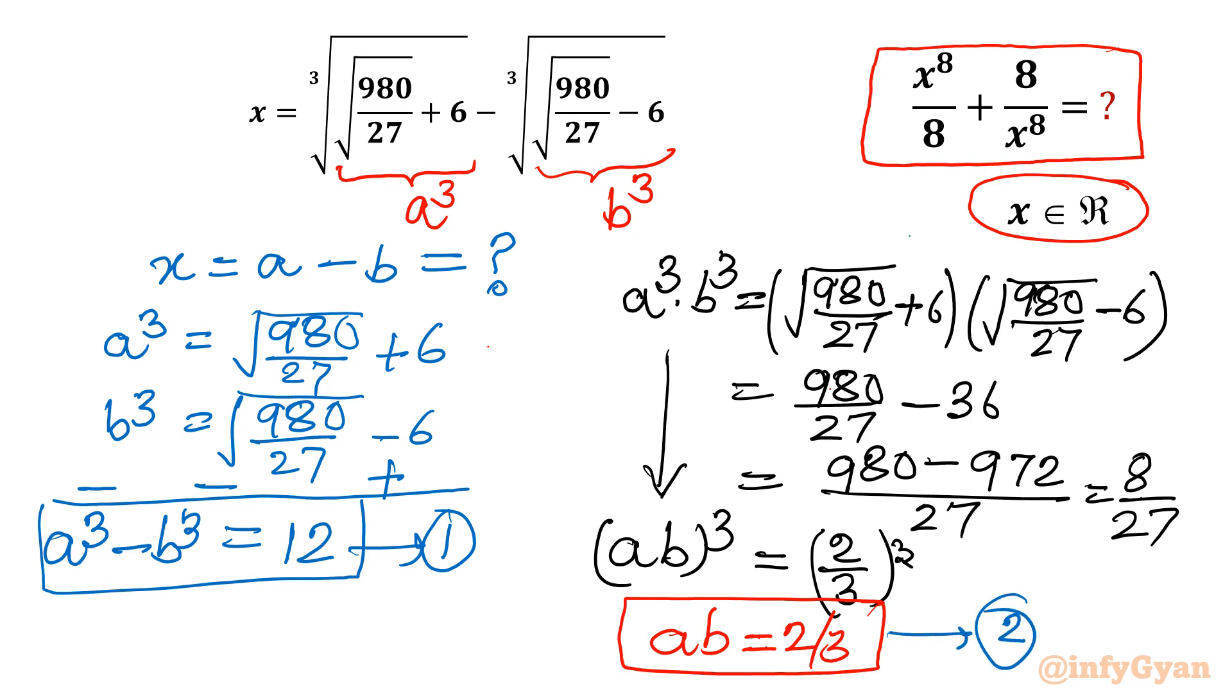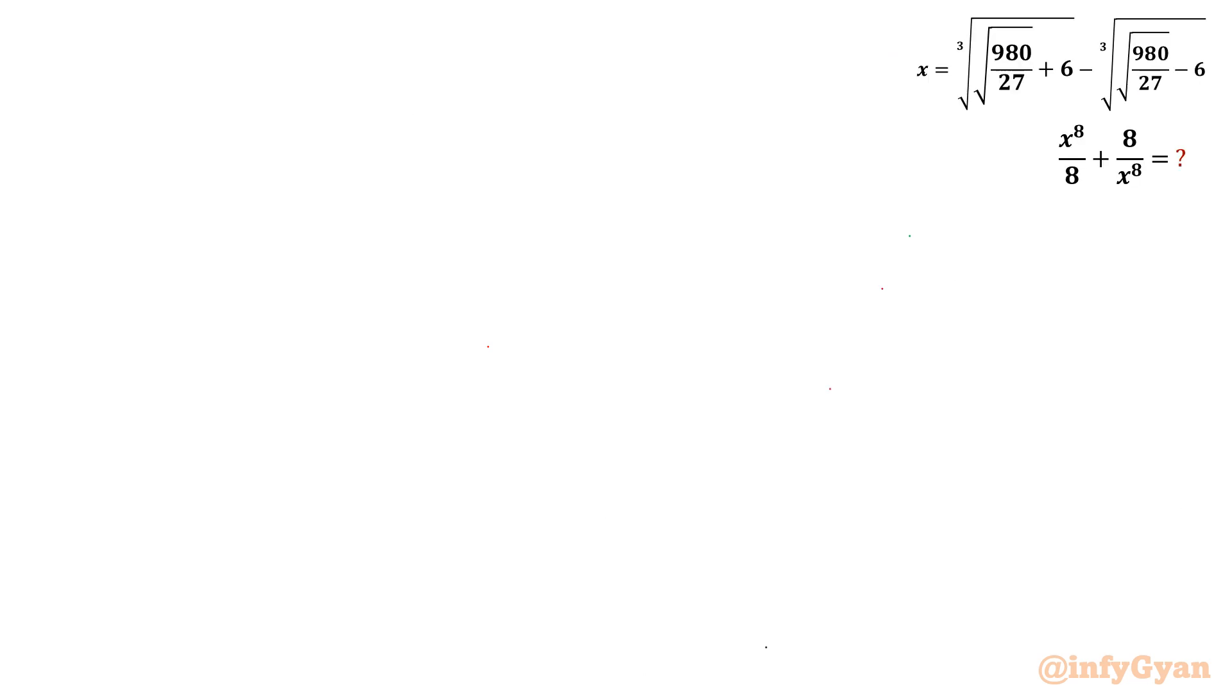So two very important equations are known, and our target is to find out a minus b or x, both are the same thing. So let us find out a minus b value. I will write one identity: a minus b whole cube equals a cube minus b cube minus 3ab in bracket a minus b.